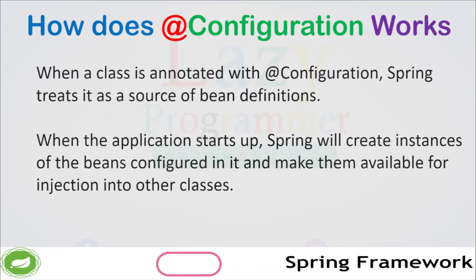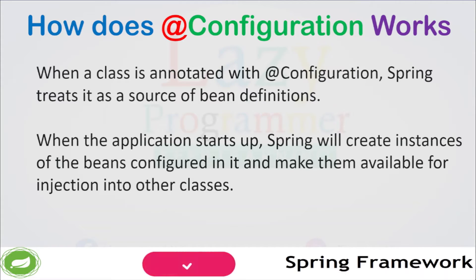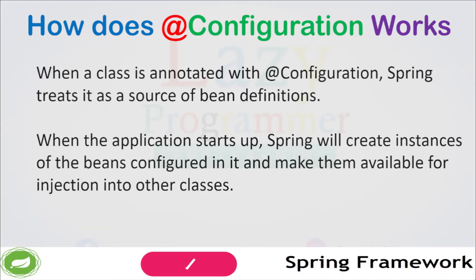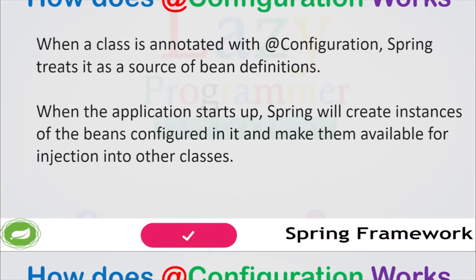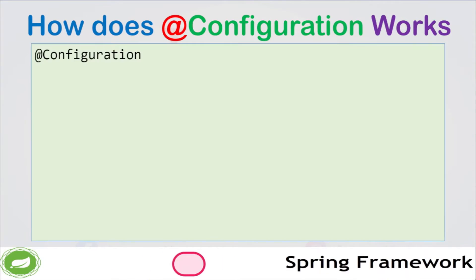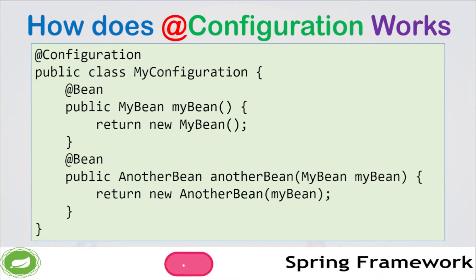This means that Spring will look for @Bean methods in that configuration class and register them with the application context. When the application starts, Spring will create instances of these beans and make them available for dependency injection into other classes wherever required. Now let's take a look at an example. We have a configuration class called myConfiguration. It contains two methods annotated with @Bean, which define two beans: myBean and anotherBean.